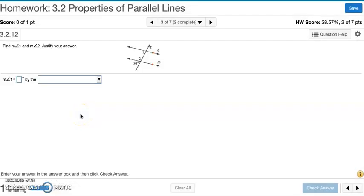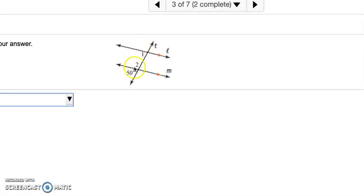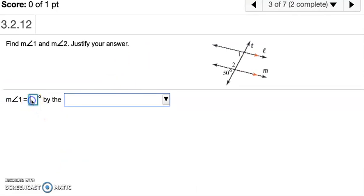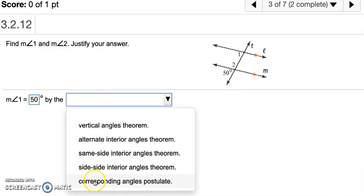Number 3. It says find the measures of angles 1 and 2 and justify your answer. So angle 1, let me zoom in to that a little bit. Angle 1 and 50 are corresponding, so that means they're going to be equal. So angle 1 is going to be 50, and we say that because they're corresponding angles.